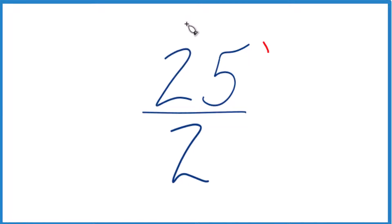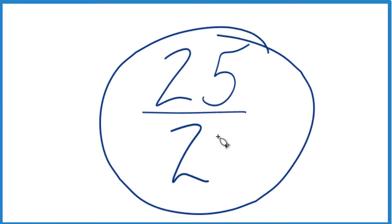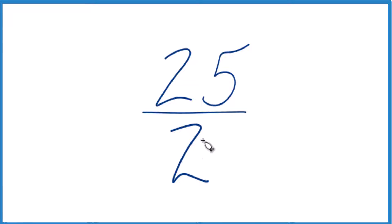Let's take the fraction 25 over 2 and convert this to a decimal. You could, on your calculator, do 25 divided by 2, and that would give you the answer.